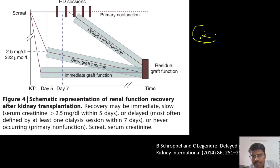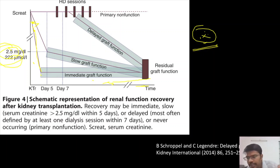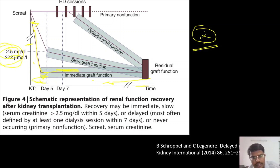This graph is very important to understand all four definitions. On the x-axis we have time and on the y-axis creatinine is mentioned. After the transplant, the creatinine might reduce drastically — the kidney starts its function immediately — and the creatinine from the baseline before transplant reaches less than 2.5 cut-off within 5 days. If it is maintained, this is the immediate graft function.